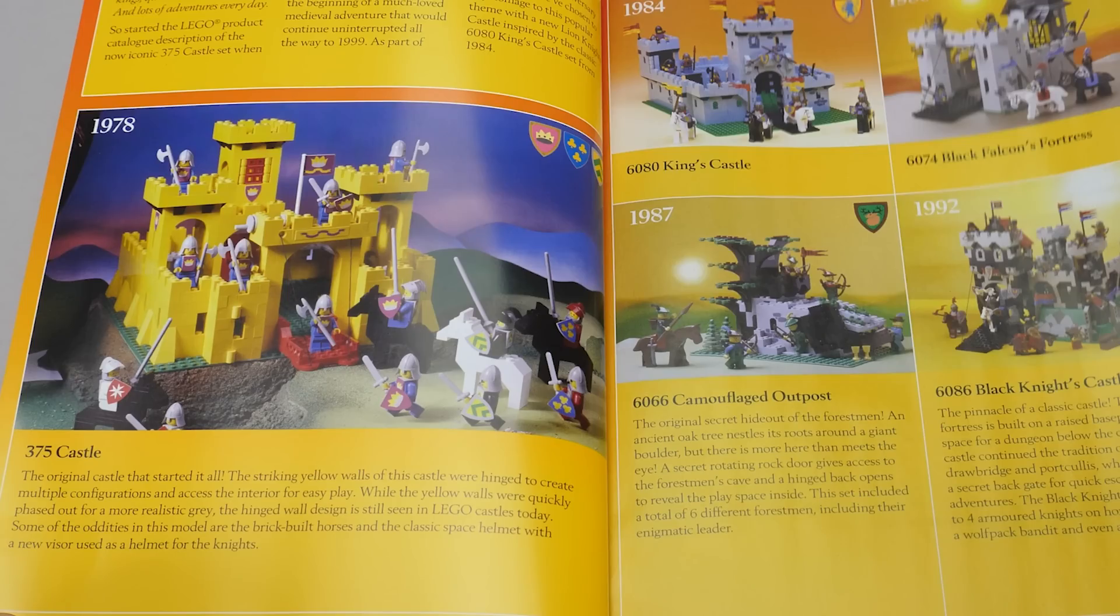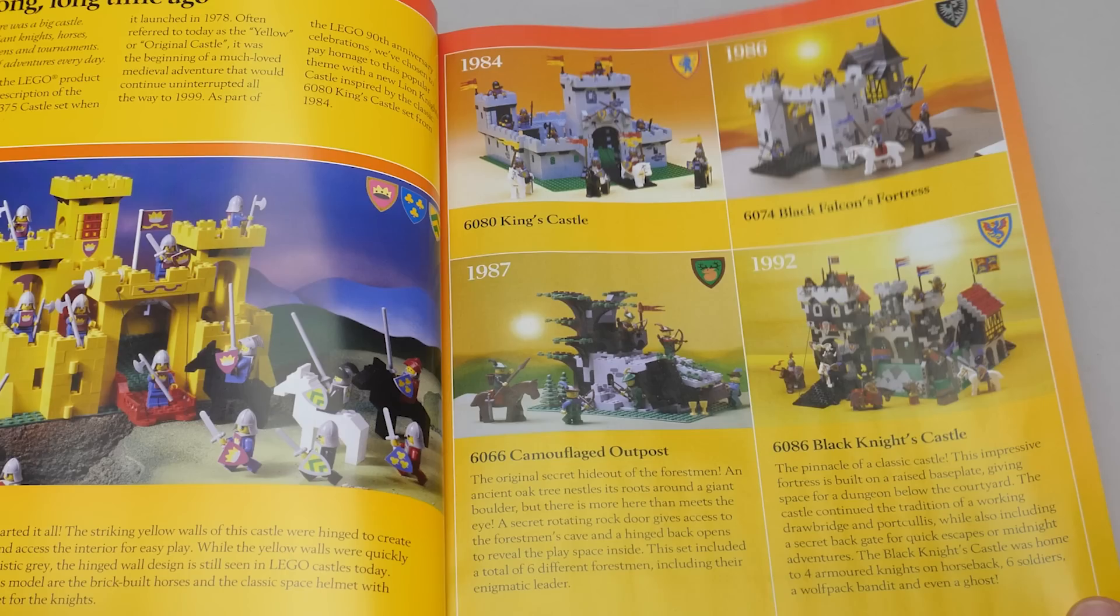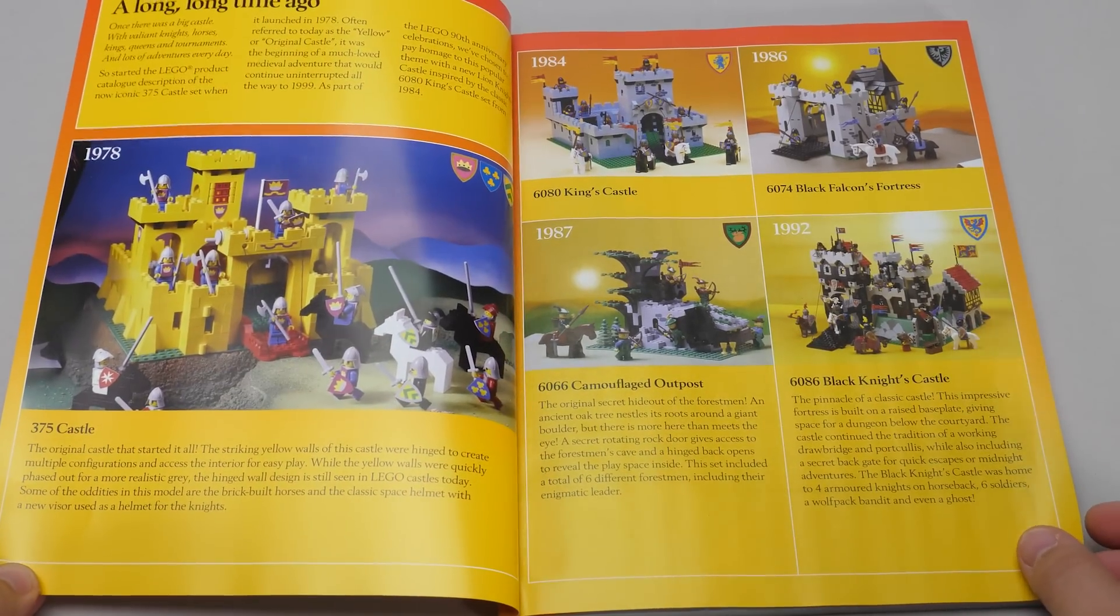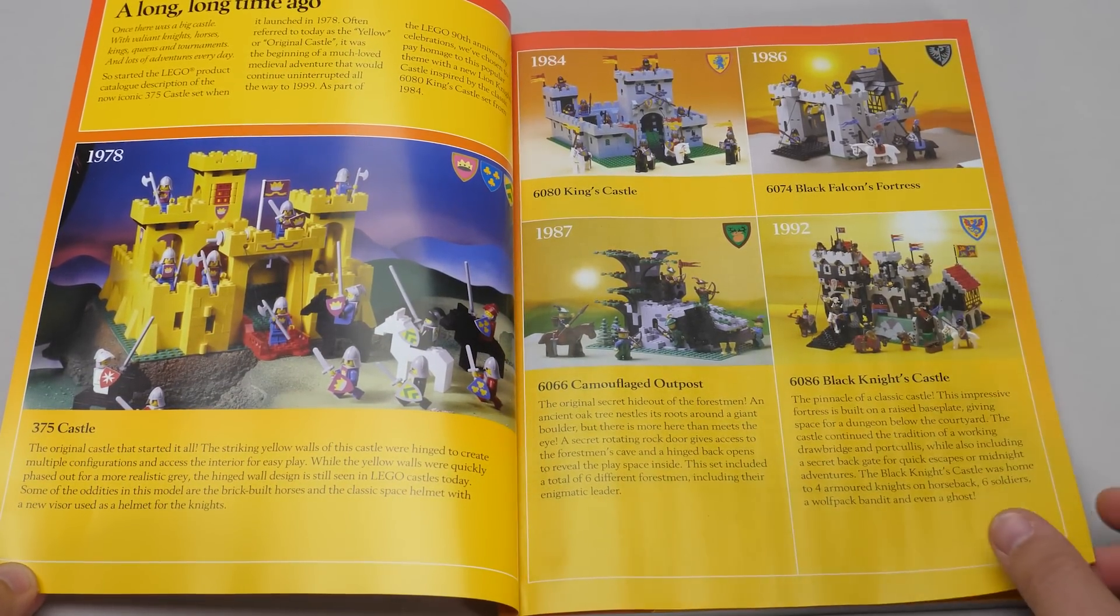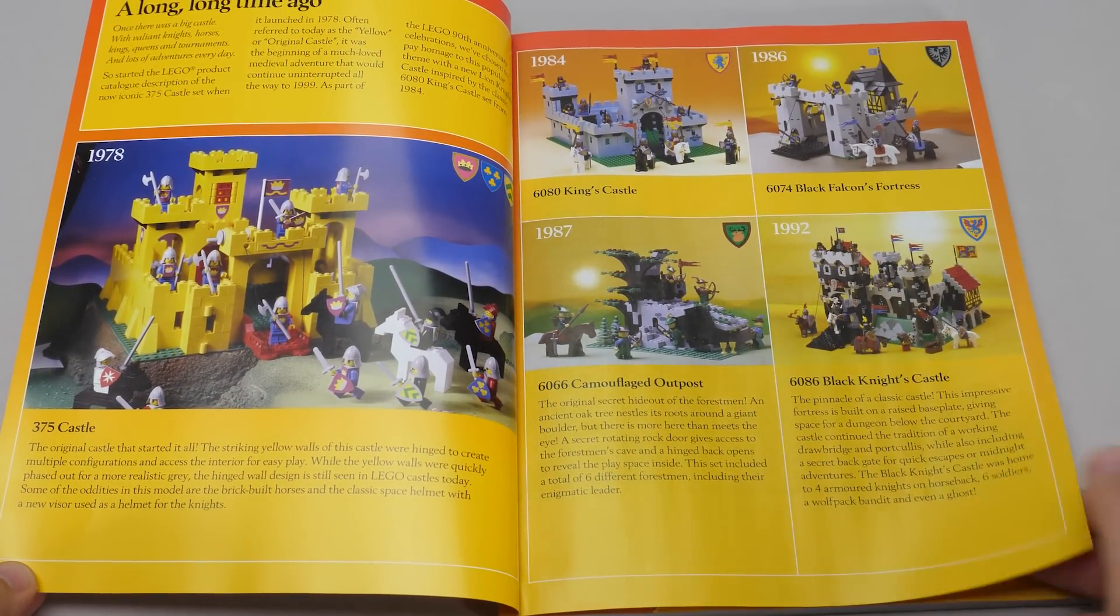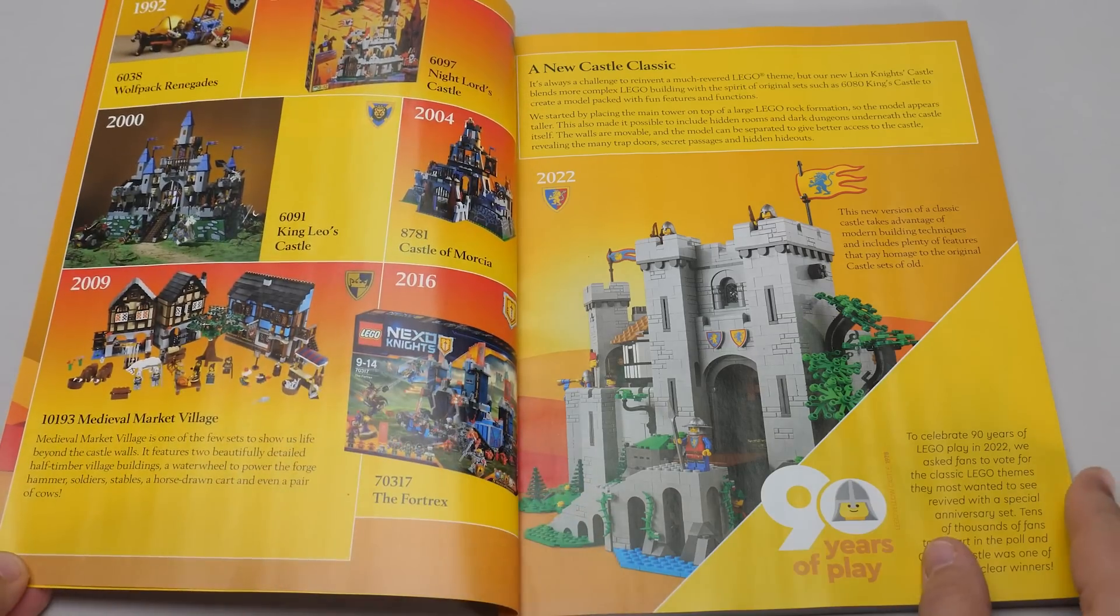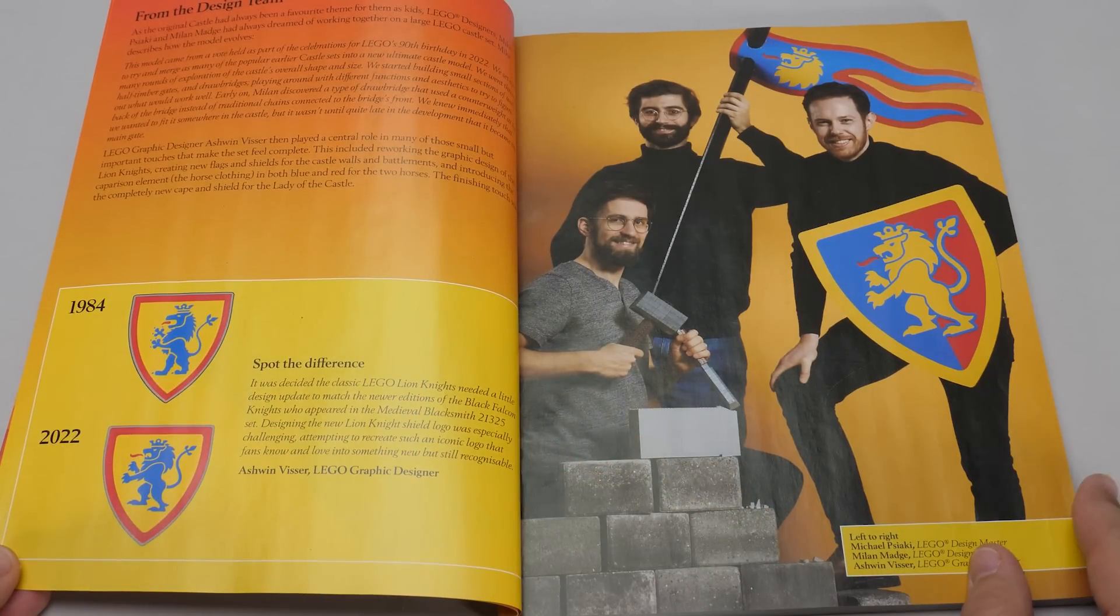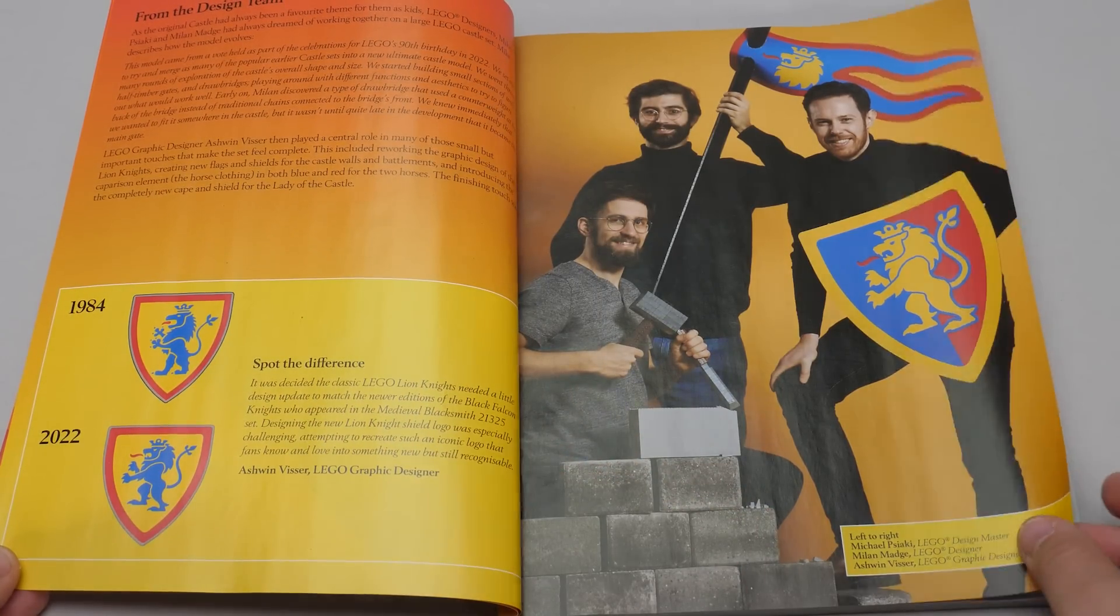Beginning with the first 375 Castle from 1978, then this 6080 King's Castle, but interestingly according to the designers that wasn't the main inspiration for this build. It was the 6086 Black Knight's Castle from 1992, with its raised base plate and dungeons. Then we get a few words from the design team and a little explanation how they recreated the original Lion Knights logo.